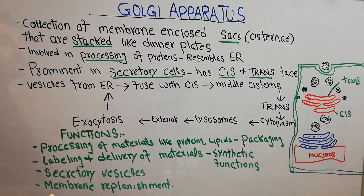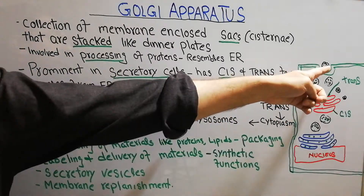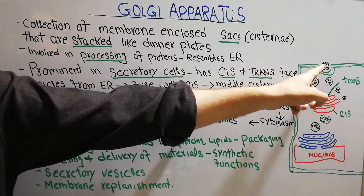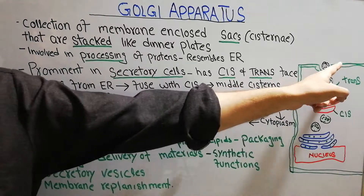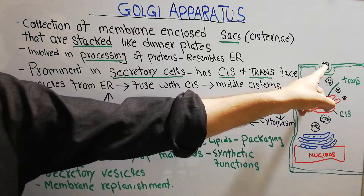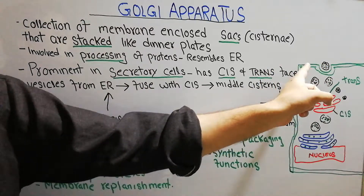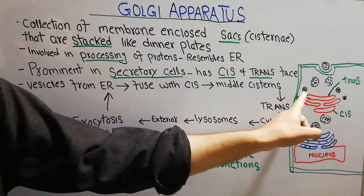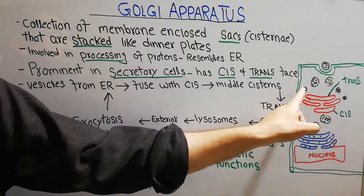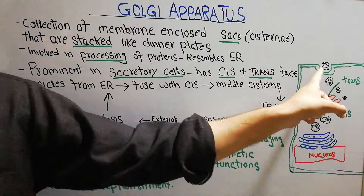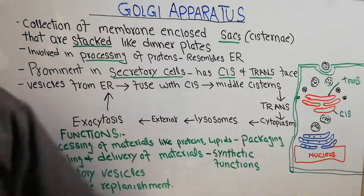Finally, the Golgi apparatus helps in the replenishment of the cell membrane. When a vesicle goes out of the cell through exocytosis, some part of the cell membrane is utilized and the amount of cell membrane decreases. When the Golgi apparatus then sends new vesicles, the membrane of those vesicles attaches to and replenishes the cell membrane, filling the gap created by exocytosis.